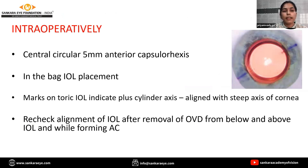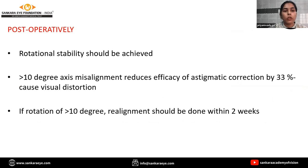Intra-operatively, we should aim for a central circular 5 mm anterior capsulorhexis for in-the-bag IOL placement. The marks on the toric IOL indicate the plus-cylinder axis, and that should be aligned along the steep axis of the cornea. We should recheck the alignment of the IOL after the removal of OVD from below and above the IOL and while forming the anterior chamber. Post-operatively, rotational stability should be achieved. If there is more than 10 degrees of axis misalignment, it will reduce the efficacy of astigmatism correction by 33%, causing visual distortion. If there is a rotation of more than 10 degrees, it should be re-aligned within 2 weeks.